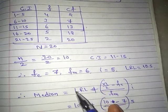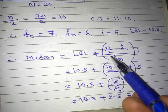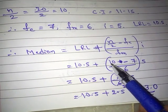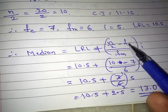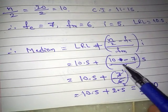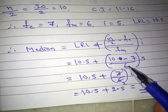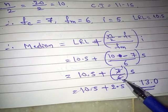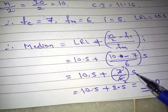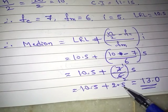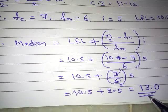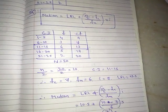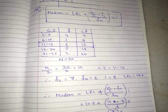Now we apply these values in the formula: Median = L + (n/2 − fc) / fm × i = 10.5 + (10 − 7) / 6 × 5 = 10.5 + (3/6) × 5 = 10.5 + 2.5 = 13. So the required median is 13.